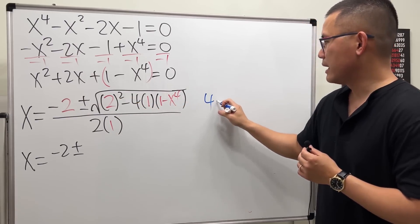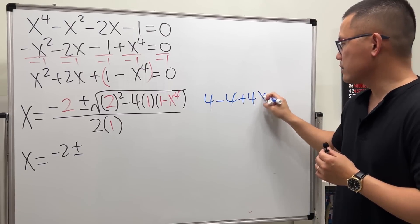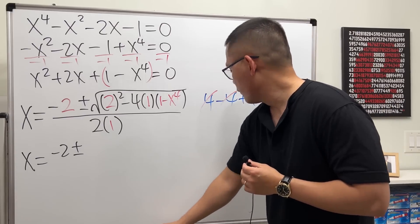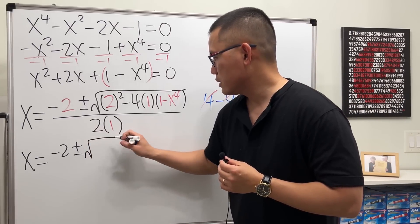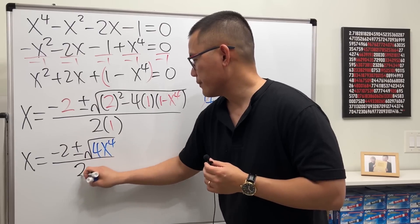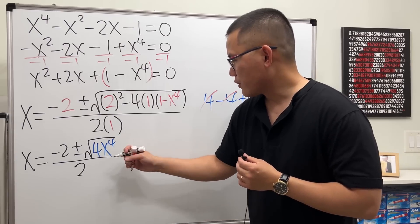Here if you look at it inside we get just 4, and then minus 4 times that is minus 4, and then minus 4 times this is plus 4x to the fourth power. So they cancel and then we just have to take the square root of 4x to the fourth power.